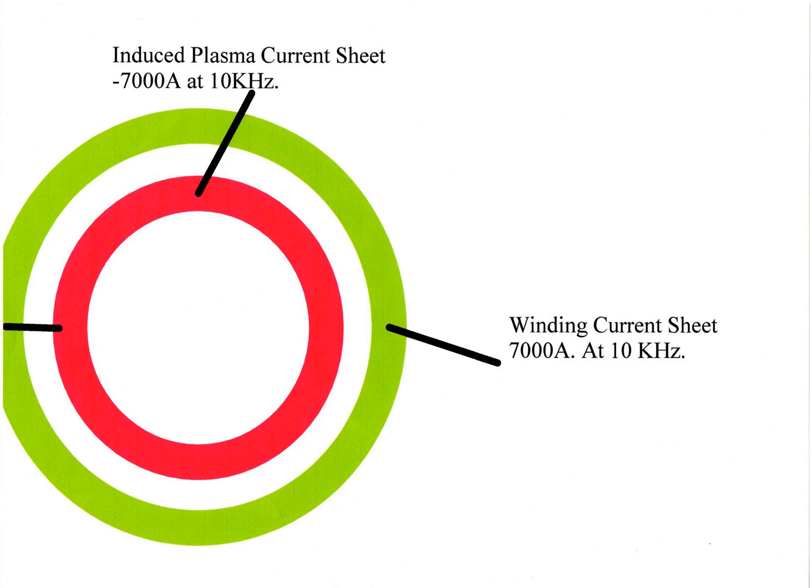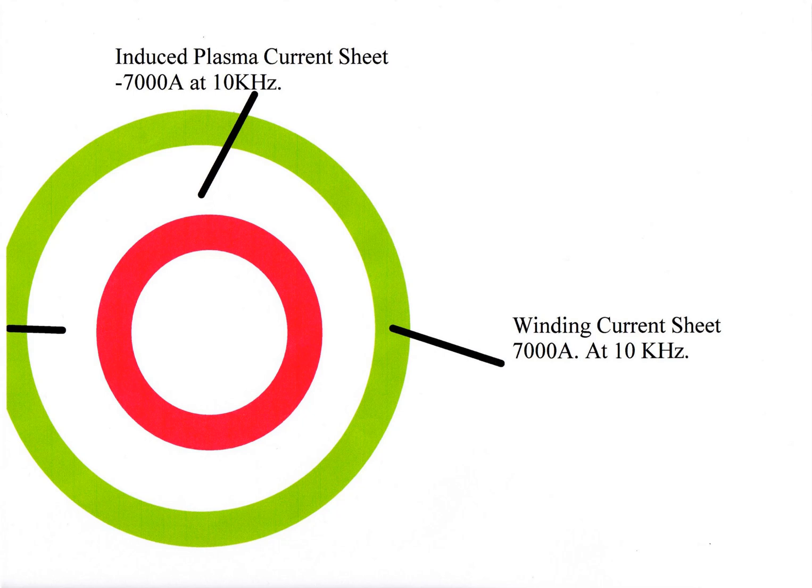The coil is oscillating at 10kHz and that induces a current in the plasma in the opposite sense, therefore repelling it and making it smaller. As it gets smaller and smaller, the pressure goes up because the forces are the same but the area is smaller, and it carries on getting smaller.